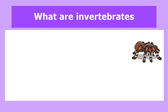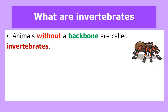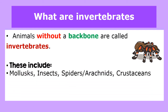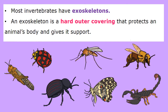Now that we have learned about the five groups of vertebrates, we are going to learn about invertebrates. Animals without a backbone are called invertebrates. These include molluscs, insects, spiders or arachnids, crustaceans, echinoderms, and worms. Most invertebrates have an exoskeleton — a hard outer covering that protects an animal's body and gives it support. Here we have a picture of some of the invertebrates, and I'm sure you can identify some of them.